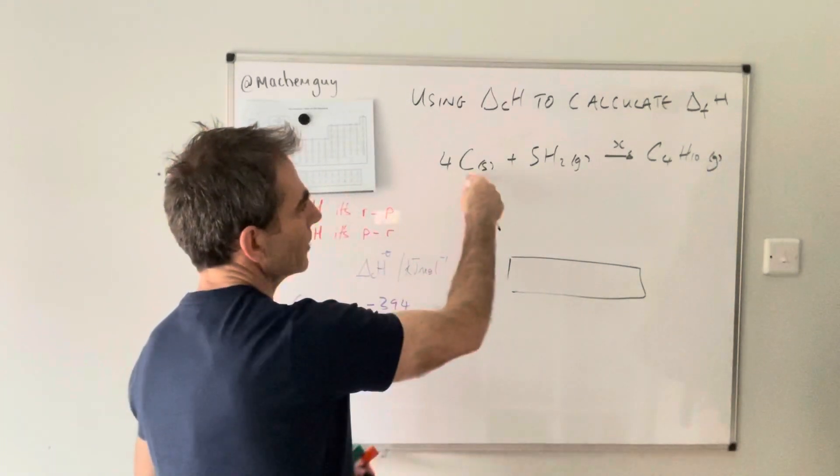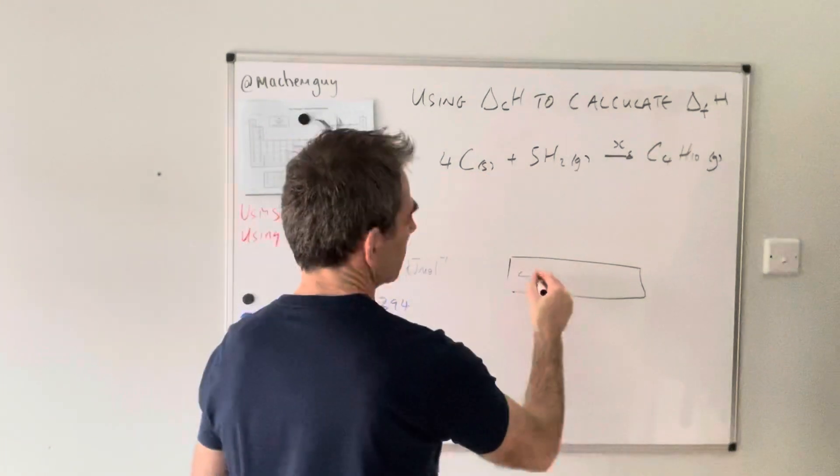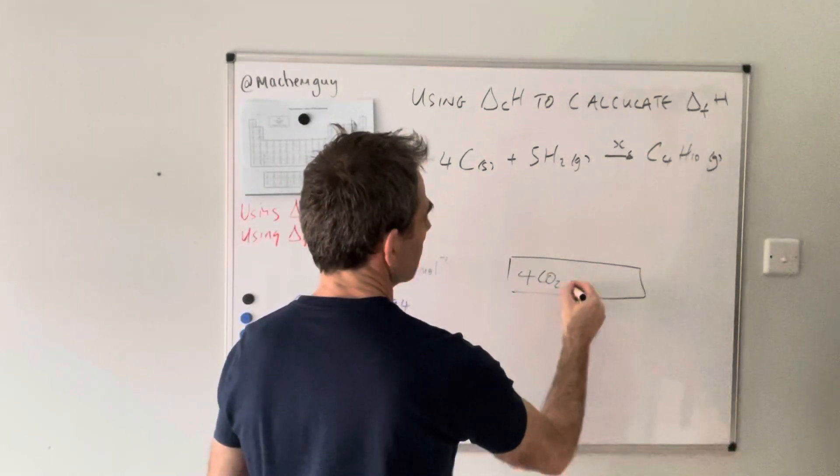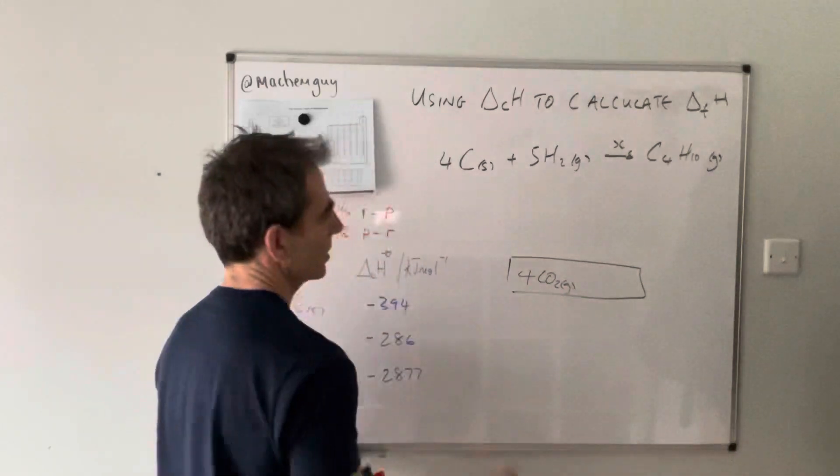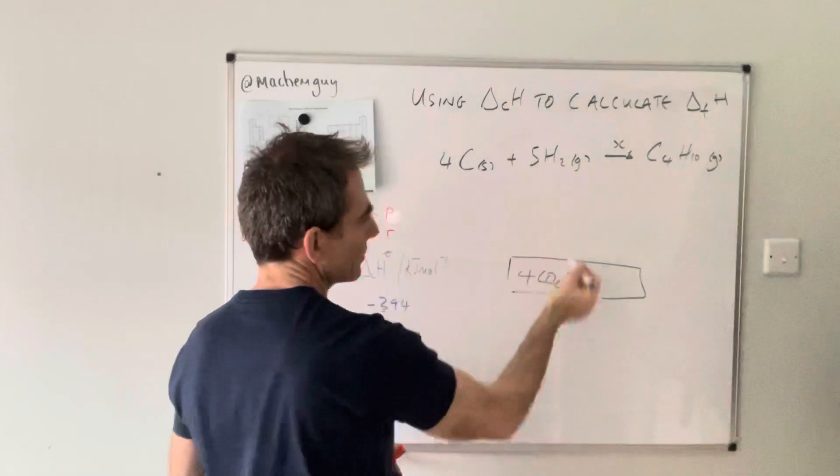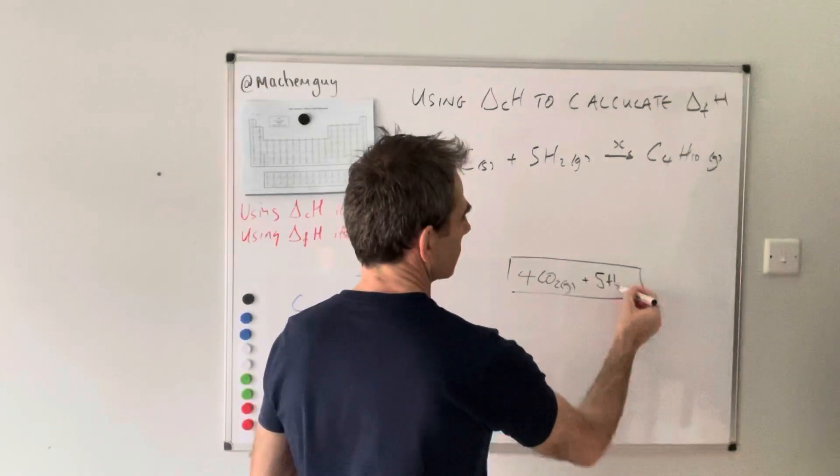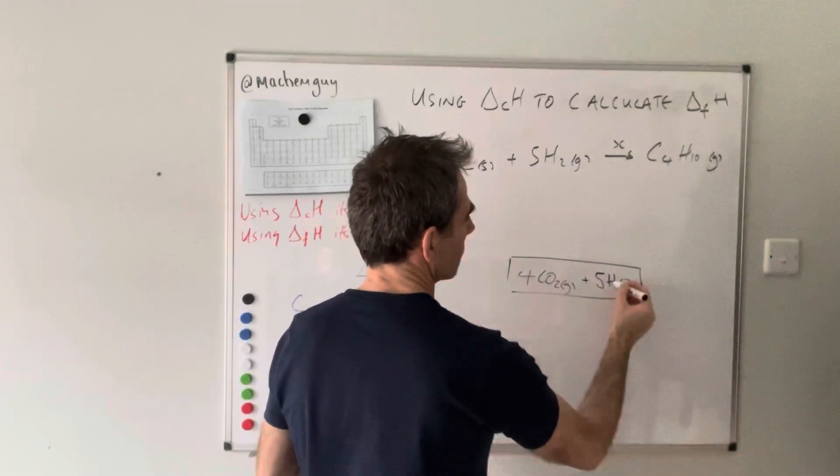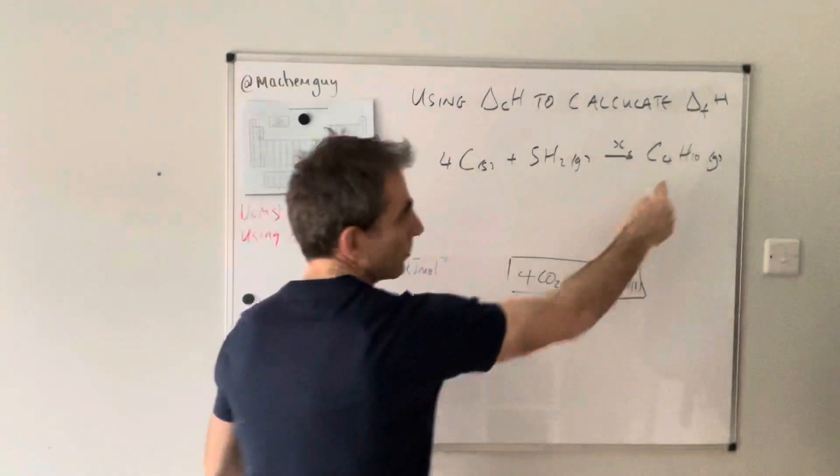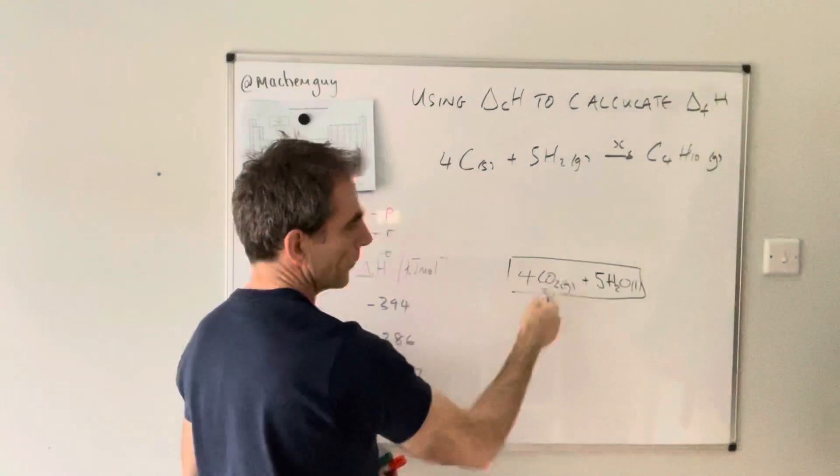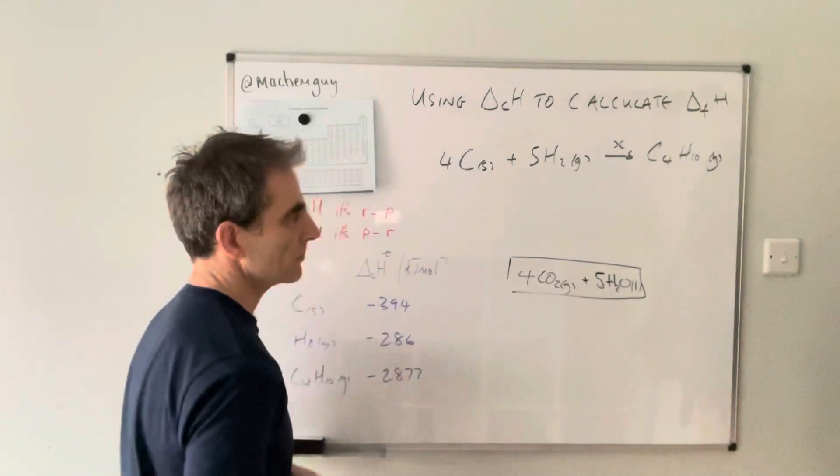If you combust four moles of carbon, you're going to make four moles of carbon dioxide gas. If you combust five moles of hydrogen, you get five moles of water. And if you combust one mole of butane, you get four moles of CO₂ and five moles of water.